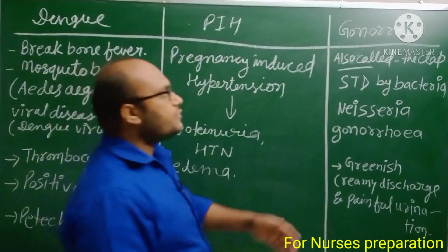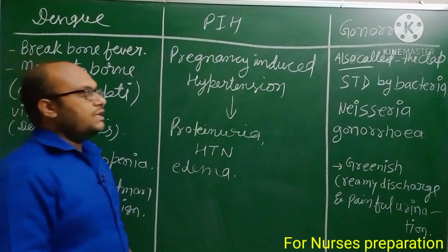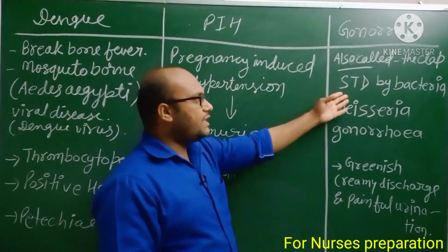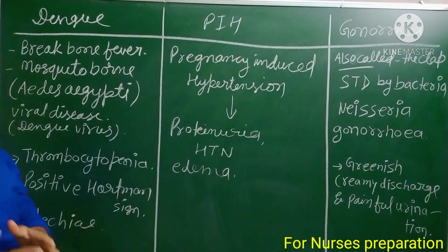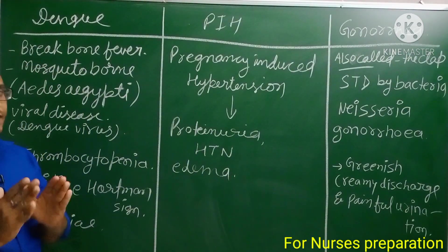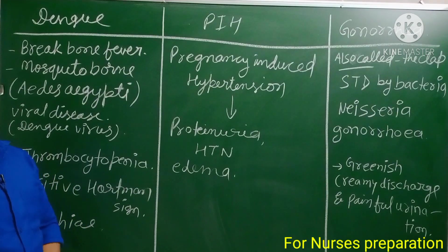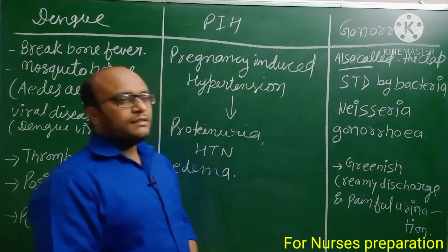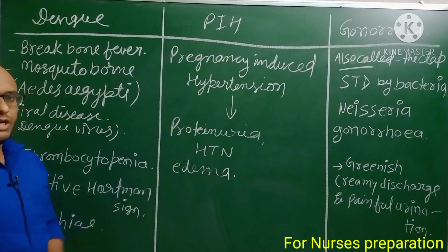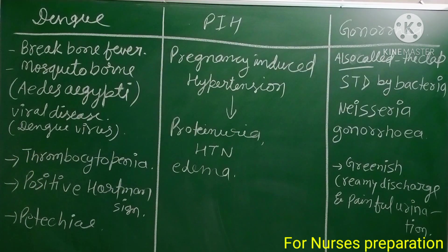The next disease is Gonorrhea, also known as 'the clap.' It is a sexually transmitted disease caused by the bacteria Neisseria gonorrhoeae. The important features of this disease are greenish creamy discharge and painful urination.